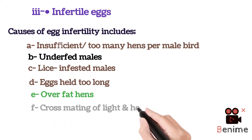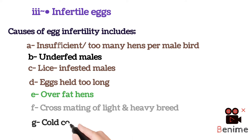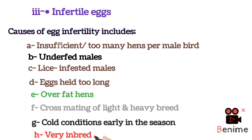Overfed hens — the body condition score of the layer — should be considered, as it also influences egg fertility. Cross-mating of light and heavy breeds may be responsible for the production of infertile eggs. Cold conditions early in the season are another factor influencing egg fertility, and inbred lines may also be a cause of egg infertility.